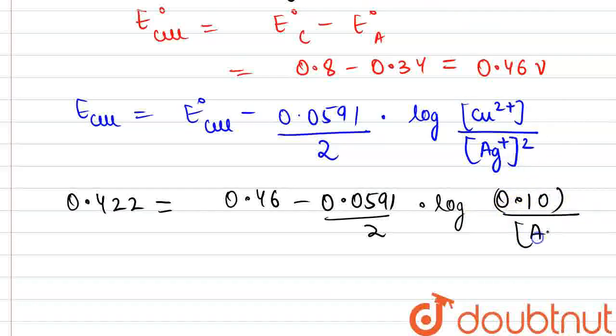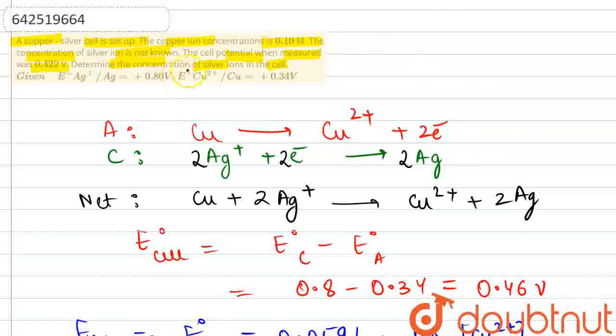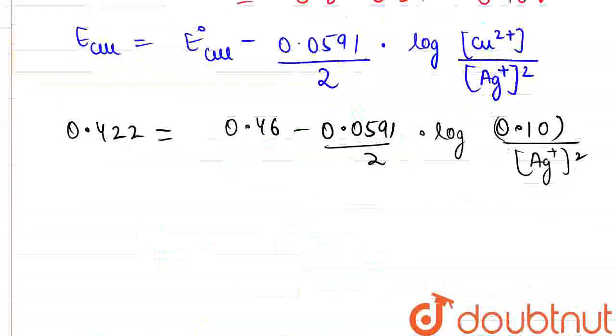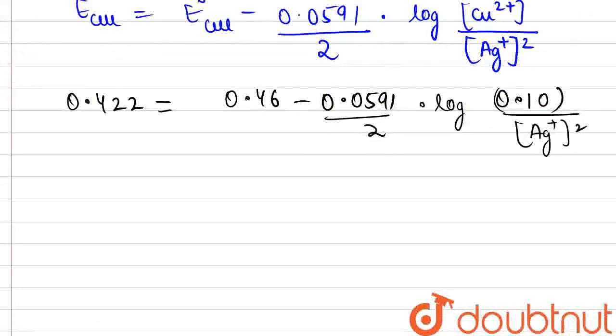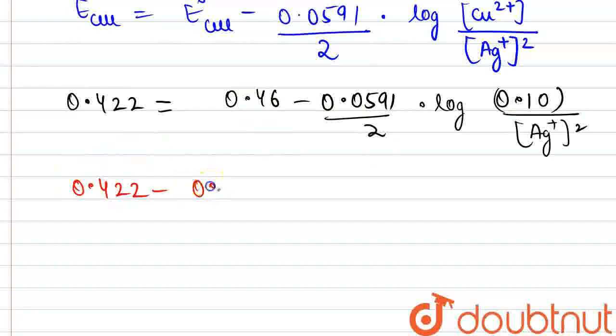And the silver ion concentration is to be calculated by us. We can see here, determine the concentration of silver ions. So, from here using the log expression, we will be solving this part 0.422 minus 0.46.